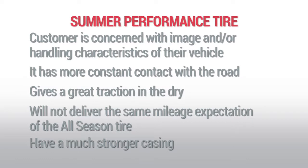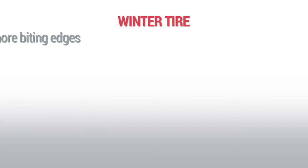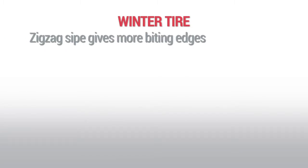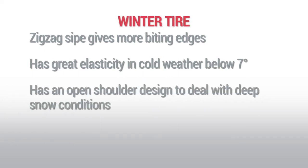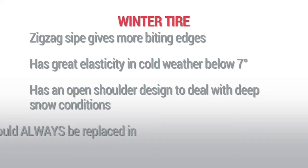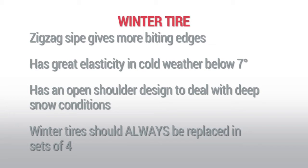Depending on where you live in Canada, a large portion of customers may be purchasing winter tires. Winter tires have zigzag sipes as opposed to the straight sipes on an all-season tire. Zigzag sipes provide more biting edges as the tire goes through its rotation, and the tire has greater elasticity in cold weather. Winter tires are designed to run at temperatures below 7 degrees Celsius. When the rubber remains soft and pliable at those cold temperatures, it gives much better grip on ice — imagine a frozen hockey puck on ice sliding for a long period. These tires also have open shoulder designs to deal with snow conditions. Winter tires should always be replaced in sets of four to give the same biting traction on all four wheel positions.